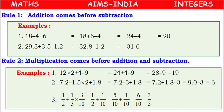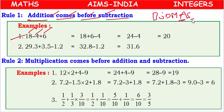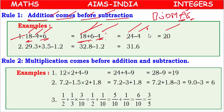Rule 1: Addition comes before subtraction. Suppose we have 18 minus 4 plus 6. According to BODMAS rule, from addition and subtraction, addition has to come first. So we write the plus terms together — 18 plus 6 gives 24 — and then subtract 4. So addition first, subtraction next. Like that only we have to solve the problem.